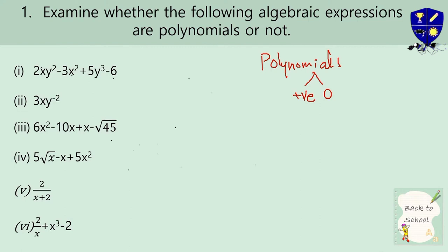Now let's see the first expression. All the powers present are: square, 1, square, cube, and 0. That means this is a polynomial. In case there is a minus power, we say that it is not a polynomial. So this first expression is a polynomial.